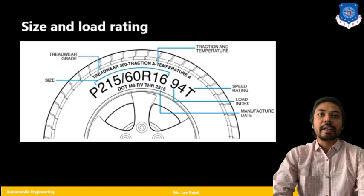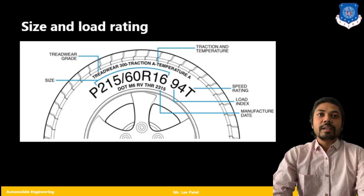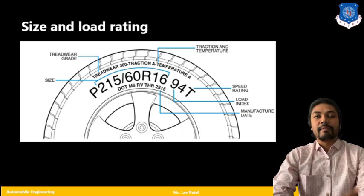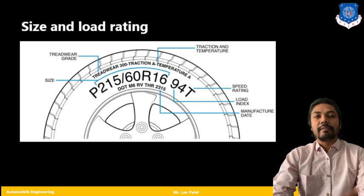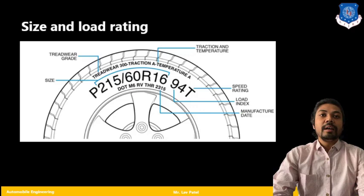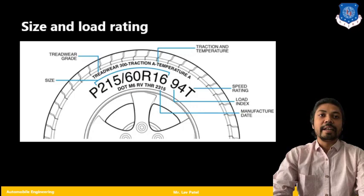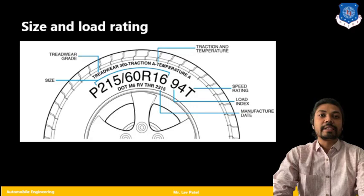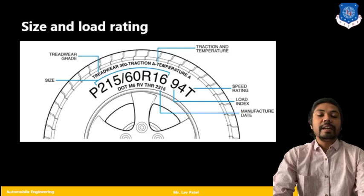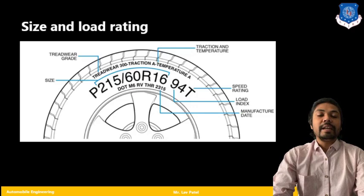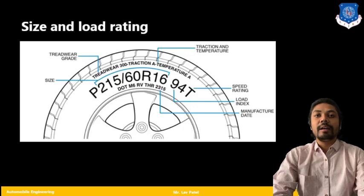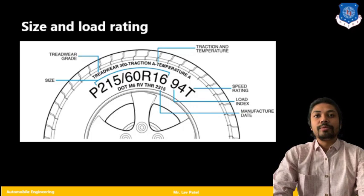If I am talking about temperature and traction, here you can see one code has been given like treadwear grade, which kind of tread we are using. That is also mentioned over the tire. Also, the traction and temperature that can resist up to is given also. You will find speed rating, that is T. Also, 94, that is the load index. So that is the capacity of the individual tire to carry load. Last one is the manufacturing date or year. This information has been provided for individual tires, and for our study we have only a few that are very useful, like 215/60R16, that is the main specification for the tire.